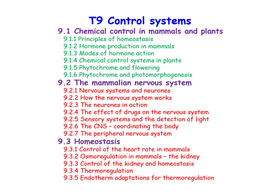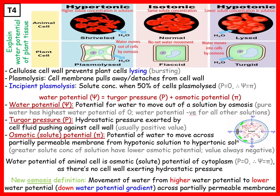Topic 9: Control Systems. 9.1 Chemical Control in Mammals and Plants. In topic 4 we learnt the importance of water moving either into or out of cells by osmosis in both animal and plant cells. We know the importance in animal cells because we don't want the animal cells to either lyse or shrivel.